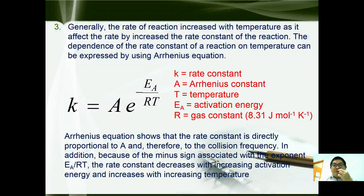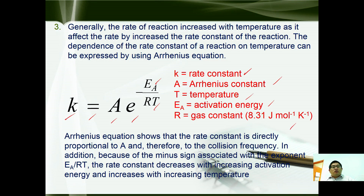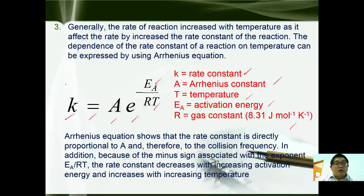Generally, the rate of reaction increases with temperature, as the rate is increased by the rate constant. The dependence of the rate constant on temperature is expressed by the Arrhenius equation: k = Ae^(−Ea/RT), where k is the rate constant, A is the Arrhenius constant, T is temperature in Kelvin, Ea is the activation energy, and R is the gas constant. The Arrhenius equation shows that the rate constant is directly proportional to A and therefore to collision frequency. Because of the negative sign on the exponent, the rate constant decreases with increasing activation energy but increases with temperature. In other words, to increase the rate constant, we need a low activation energy or a high temperature.